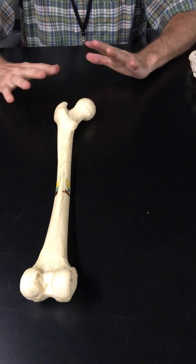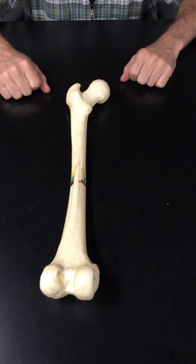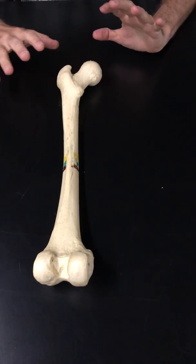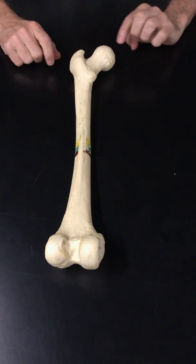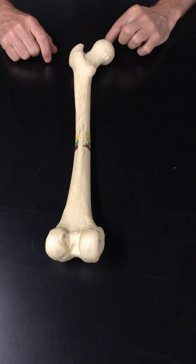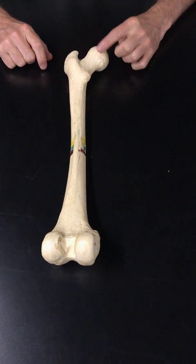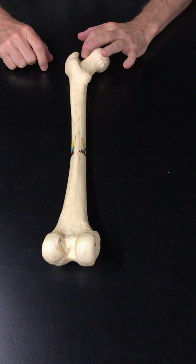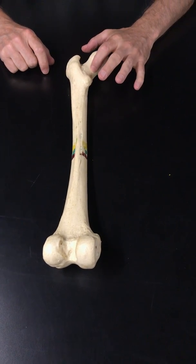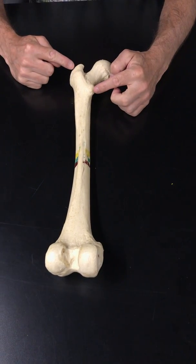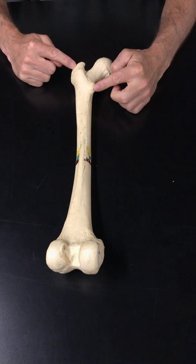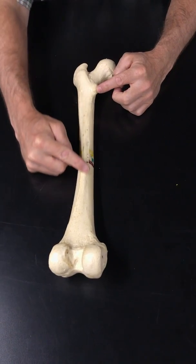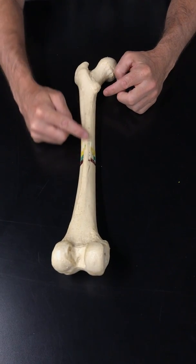It follows the format of the humerus in that similar names describe the structures. This is the head. This is the neck. And then we have two projections coming off. And then we come down onto the shaft of the diaphysis.